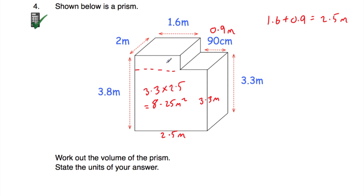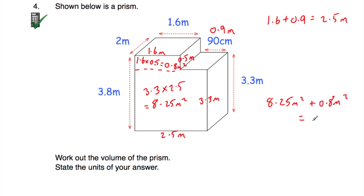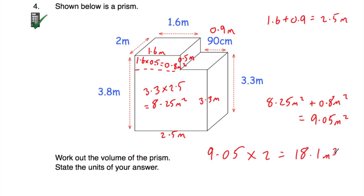Now we just need to find the area of the top part. We know this is 3.3 and the whole height is 3.8, so this top bit must be 0.5 metres. The width is 1.6 metres. So 1.6 multiplied by 0.5 is equal to 0.8 square metres. Adding them: 8.25 plus 0.8 is equal to 9.05 square metres — that's the area of the cross-section. Multiplying by the length of 2: 9.05 multiplied by 2 is equal to 18.1 metres cubed.